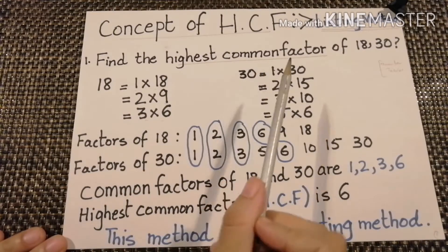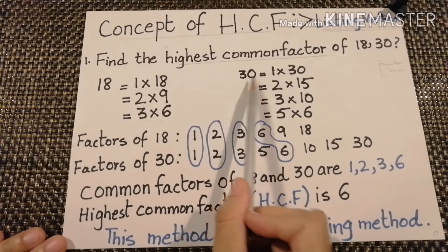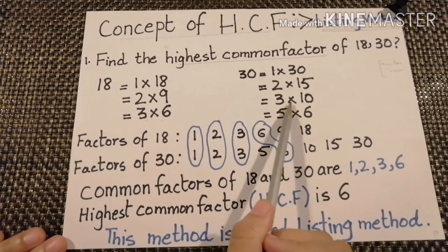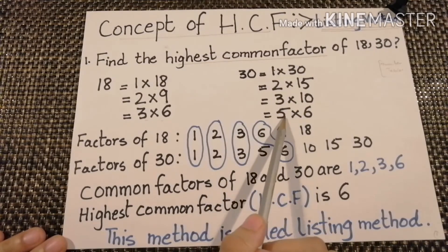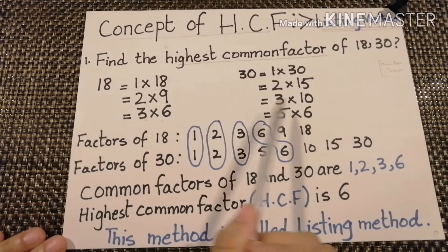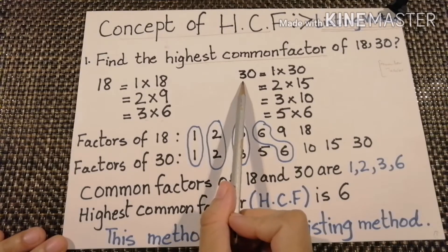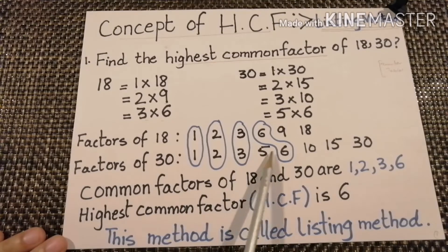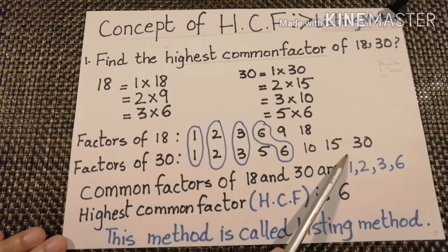For 30: 1 times 30 is 30, 2 times 15 is 30, 3 times 10 is 30, 5 times 6 is 30. So the factors of 30 are 1, 2, 3, 5, 6, 10, 15, and 30.